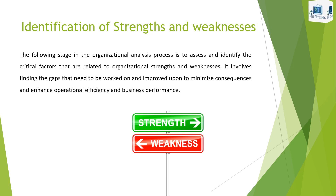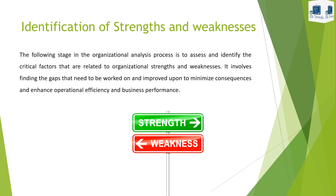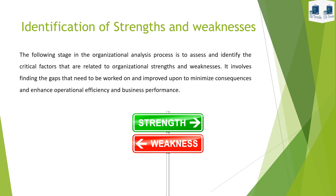The following stage in the organizational analysis process is to assess and identify the critical factors related to organizational strengths and weaknesses. It involves finding the gaps that need to be worked on and improved upon to minimize consequences and enhance operational efficiency and business performance. Strengths are capitalized upon, and the strong areas are assessed to examine the factors that contribute to organizational strength and success. These strengths help the organization achieve its objectives and lead to a competitive advantage.